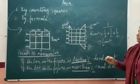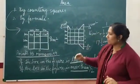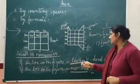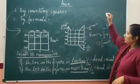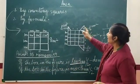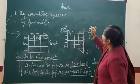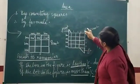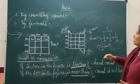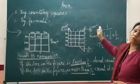Now what points are to be remembered when we use the counting squares method? First, if the portion of the figure inside a box is less than half, do not count that box. For example, if only a very small corner is covered — that is one fourth or less — we don't take it into account.